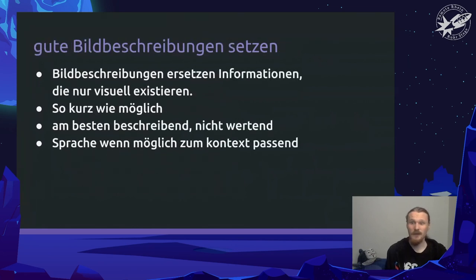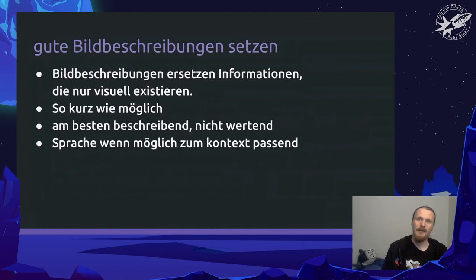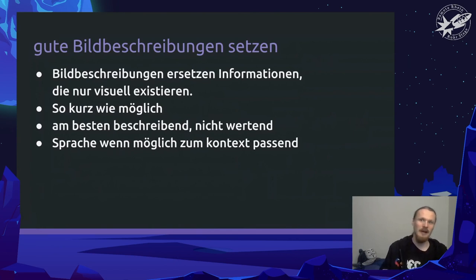Something else that you can do that will only cost you two to five minutes per picture is adding image text. Texts on images replace image information that only exists visually and ideally are as short as possible. Image descriptions that apply opinion on the picture are not that great — they should be entirely descriptive. For example, with a comic, you shouldn't explain the visual joke, but only explain all the base information from the picture that we need to understand the joke ourselves.